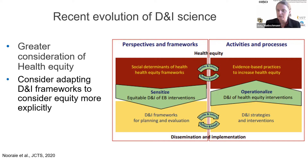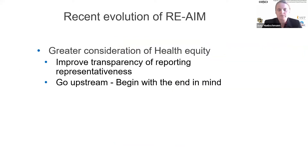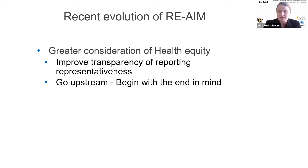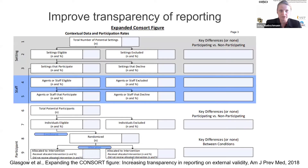With RE-AIM, are there ways to think about equity even more than we have in years past? Some things evolving with RE-AIM as we try to include greater consideration of health equity: one piece is to improve the transparency of reporting representativeness — it's always been there in the definition, but when people say they're following RE-AIM, are they actually getting to the level of representativeness? Another separate thing is to go upstream — using RE-AIM for planning, beginning with the end in mind.